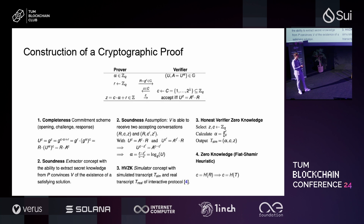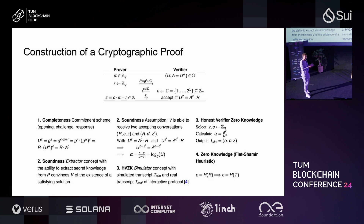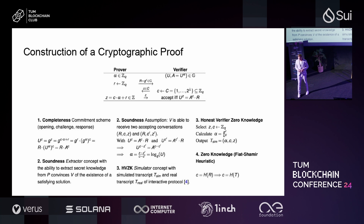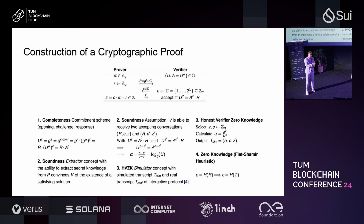To show the zero knowledge property, when you construct this using the simulation paradigm you typically only get honest verifier zero knowledge. This means the verifier does not learn anything, however the verifier also behaves honestly — which is not typically the case in reality, since we always have to assume a maliciously acting verifier and prover. Running two instances of the transcript and showing the simulated and real transcripts are indistinguishable gives us honest verifier zero knowledge.